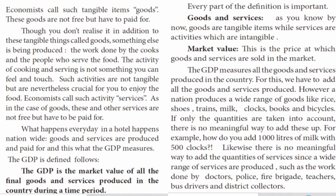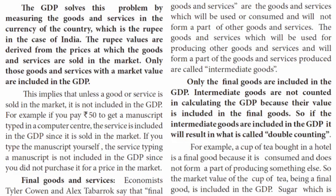To measure all these different goods — like milk and other products — we use their market value, that is their price. We cannot simply add up quantities of different goods directly, so instead we use cost or price. We calculate GDP using the market value of all goods and services, comparing them on a common cost basis.